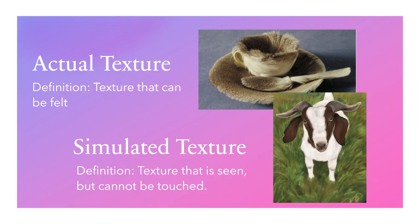Actual texture is texture that can be felt with your fingers through the sense of touch. Simulated texture is texture that is seen but cannot be touched, like a photograph.